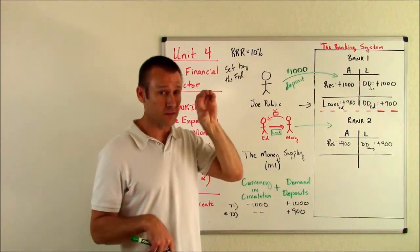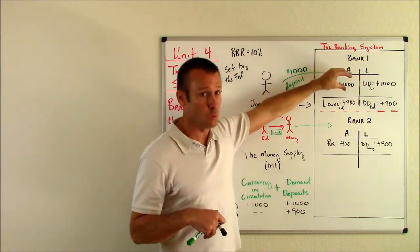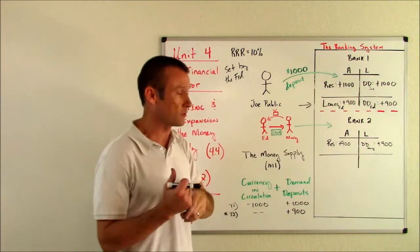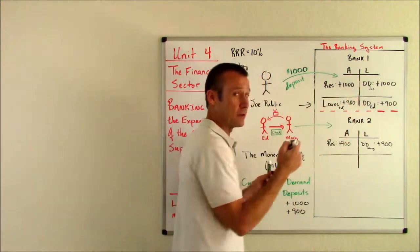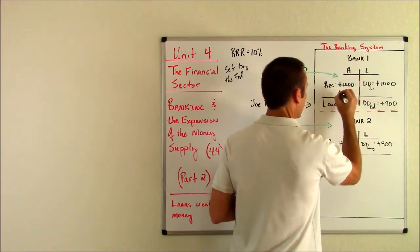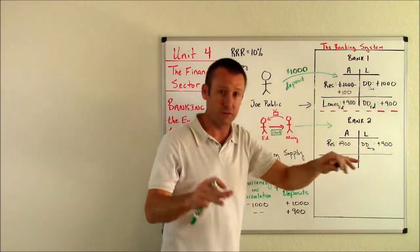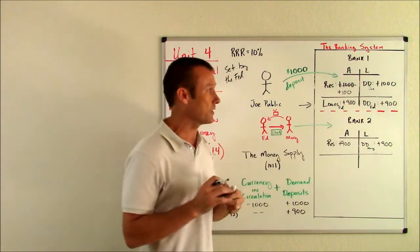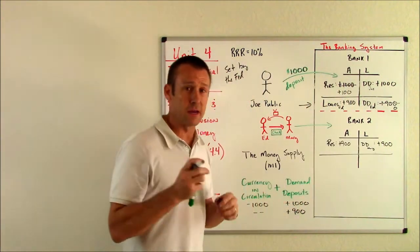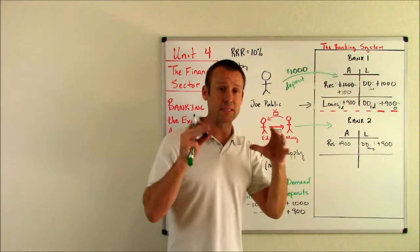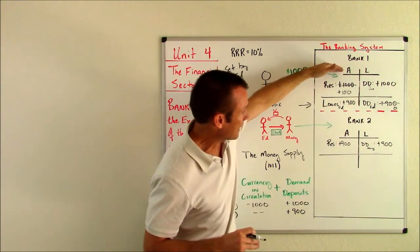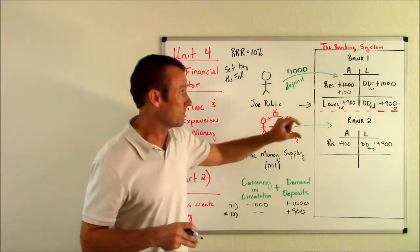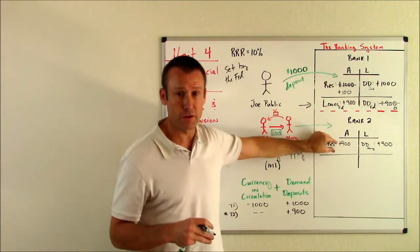The Fed is going to take that check, get their books right, and send it to bank one and say, hey bank one, you got to get your books right now. And so bank one goes, Ed wrote a check to Mary who banks at bank two. Here's what I need to do. I don't have a thousand in reserves anymore. I only have 100 in reserves, but that's okay because 100 is 10% of 1,000. They've got what they need in reserves. They're also going to say, hey Ed, you don't have $900 in your checking account anymore. You spent all that money. That's zero. Bank one's balance sheet is still balanced. Liabilities, 1,000 in total. Assets, 1,000 in total. That is the end of that check clearing process. The $900 of reserves from bank one moved over to bank two.